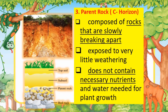Third is the parent rock, or the C horizon. It is composed of rocks that are slowly breaking apart. It is exposed to very little weathering. It does not contain the necessary nutrients and water needed for plant growth.